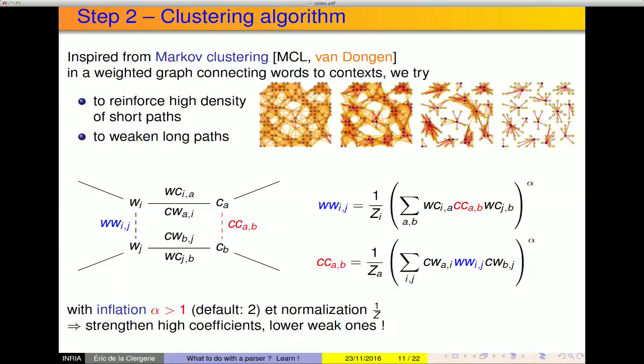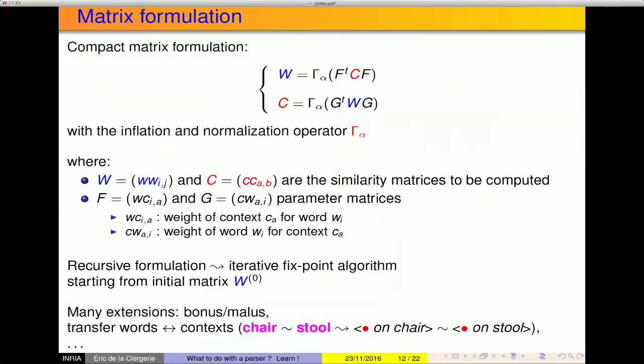What I do is apply these ideas on a bipartite graph — a graph that links a word to a context. I calculate a weighting between a word and its context in both directions (not necessarily symmetric), and try to find the affinity or similarity between two words by following paths that alternate between word and context. There is a mathematical formula to manage this: essentially an inflation mechanism that pushes up the coefficients which are relatively strong and pushes down the weaker ones, with a normalization that reinforces this effect. We can express this algorithm in matrix form. From this base, we can add extensions — for example, bonus-malus mechanisms to favor certain groupings (e.g., when words are close in edit distance, they tend also to be semantically close) and penalize others.